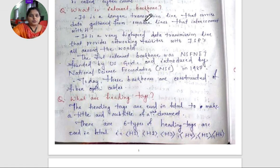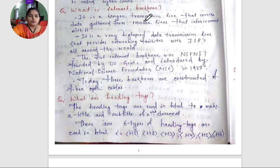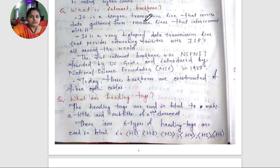The next question is: what is internet backbone? It is a larger transmission line that carries data gathered from smaller lines that are interconnected with it.